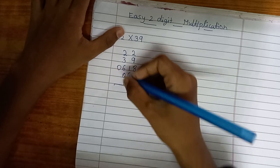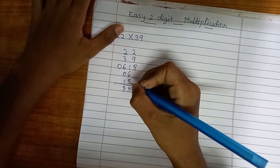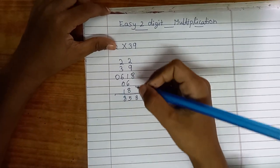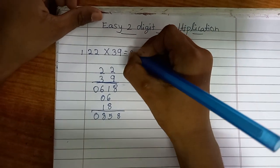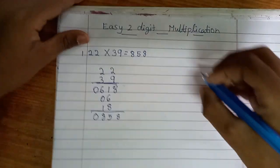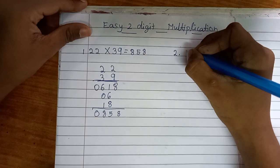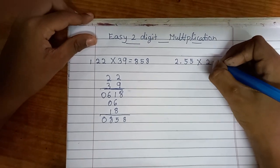7 plus 8 is 15. So the answer is 858. Now I'll take another example, which is 55 multiplied by 21.